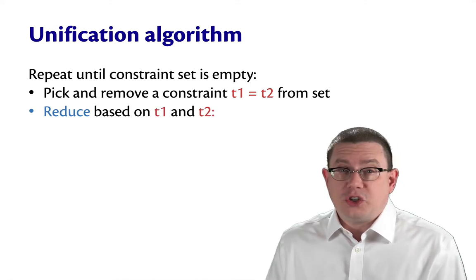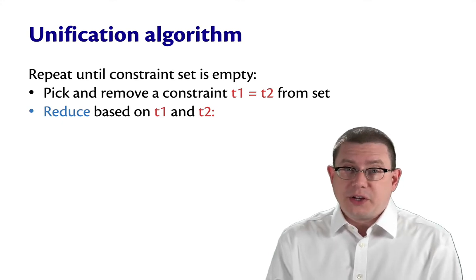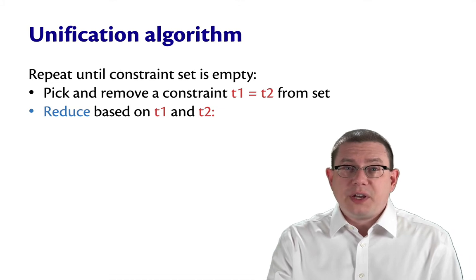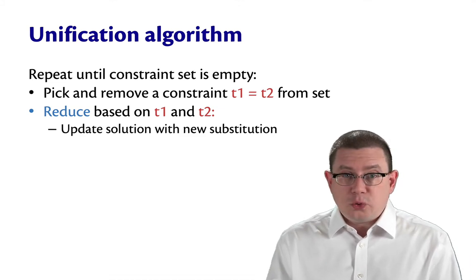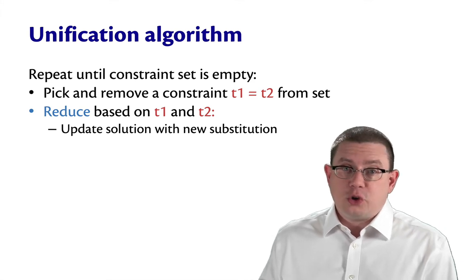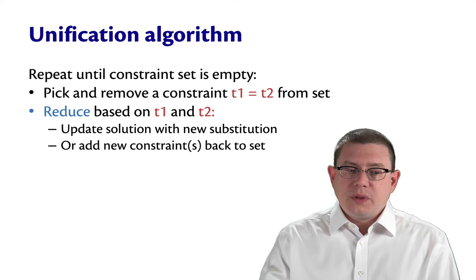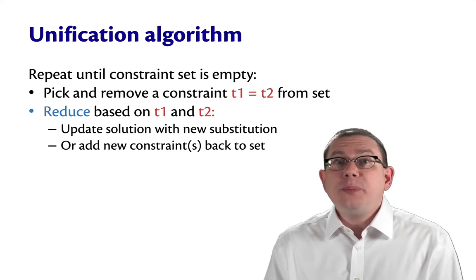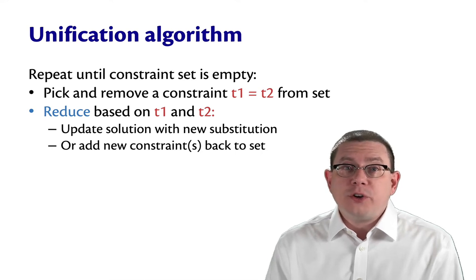The reductions, which I'll talk about on the next slide, will simplify the constraint in some way. After we do that reduction, one of three things will happen. Either we'll be able to update our solution with a new substitution, adding it on to all the substitutions discovered so far, or we end up adding some constraints back to the set — simpler constraints than before, which happened when we broke apart function arrows.